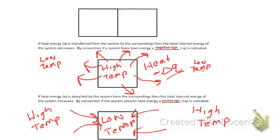Now because of that, by convention, we can look at that if the heat is absorbed by the system from the surroundings, the total internal energy of the system should increase. Therefore, by convention, the idea is that the heat energy should have a positive sign, which indicates that heat is being absorbed by the system.